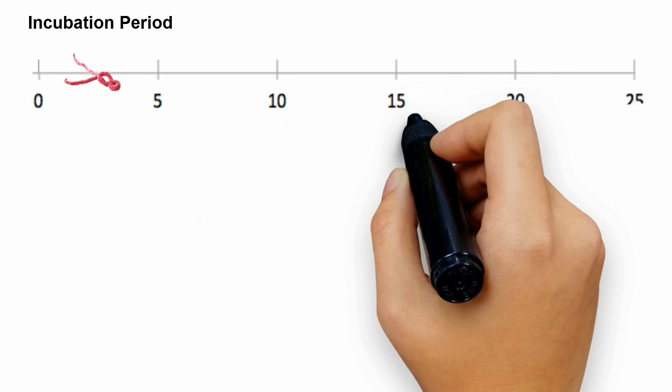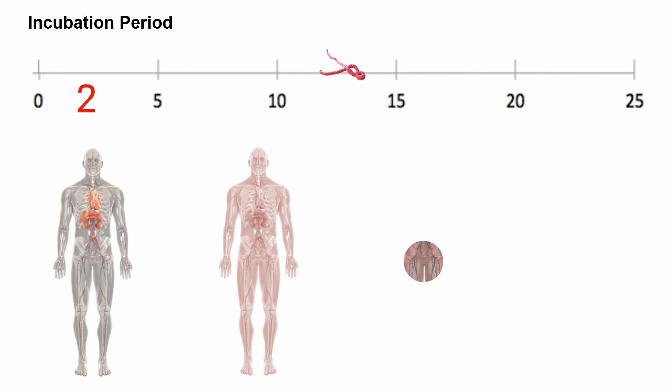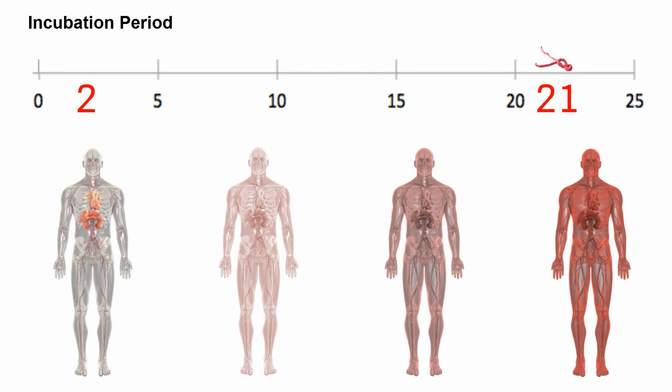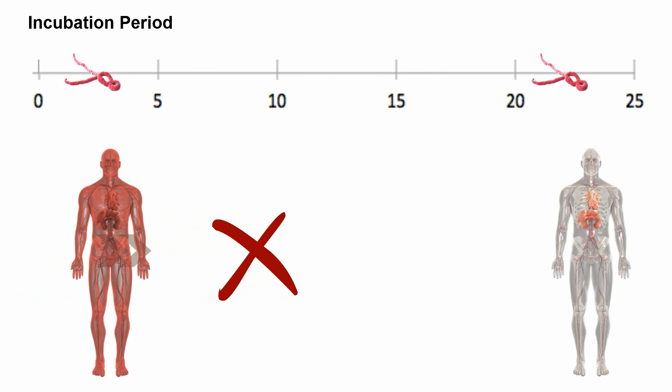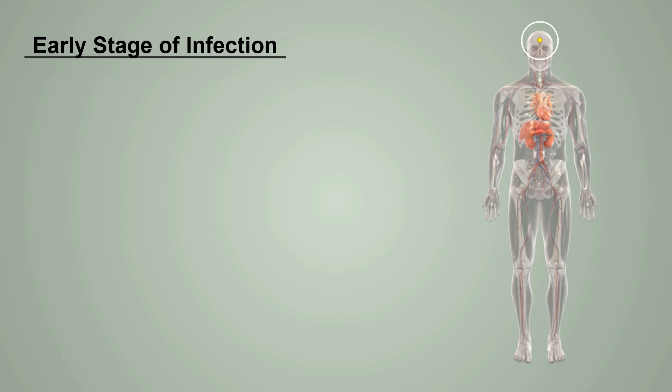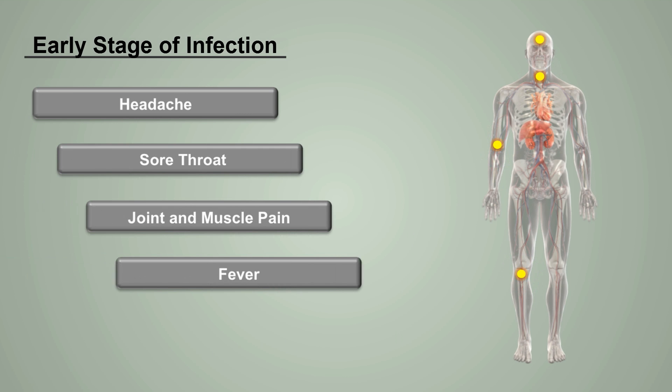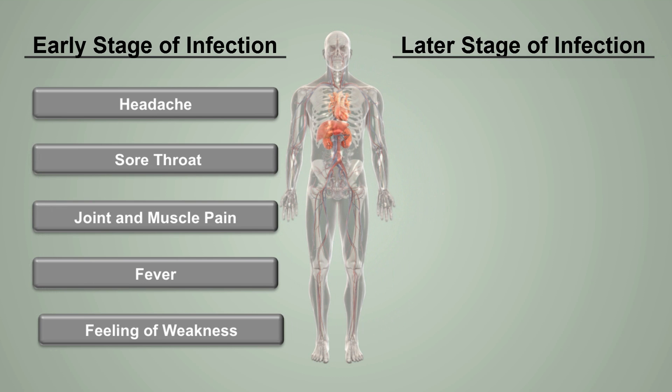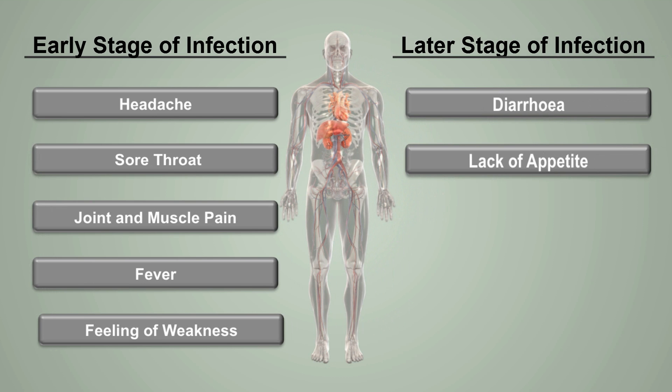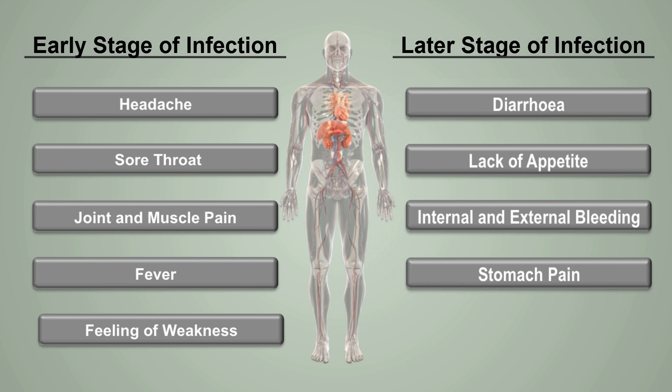The period of incubation of Ebola is from 2 to 21 days. During this period, there is no risk of transmission of disease. The early symptoms of Ebola closely mimic that of other diseases like the flu, malaria, and typhoid fever. The condition could worsen over a period of time with the appearance of more severe symptoms.